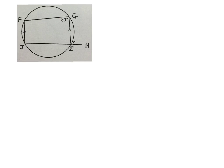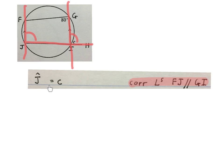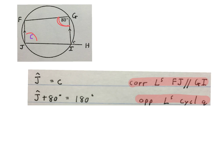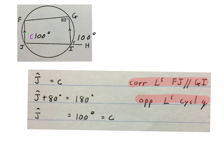In this next rider we again have a circle with a cyclic quad sitting inside it and an exterior angle at C. We also have parallel lines that we will use. Firstly, angle J is equal to small c — corresponding angles, FJ parallel to GI. Because the two lines are parallel the corresponding angles are equal. Then angle J plus 80 degrees equals 180 — opposite angles of a cyclic quad. We minus 80 from 180 and get angle J equals 100 degrees, which also equals C.